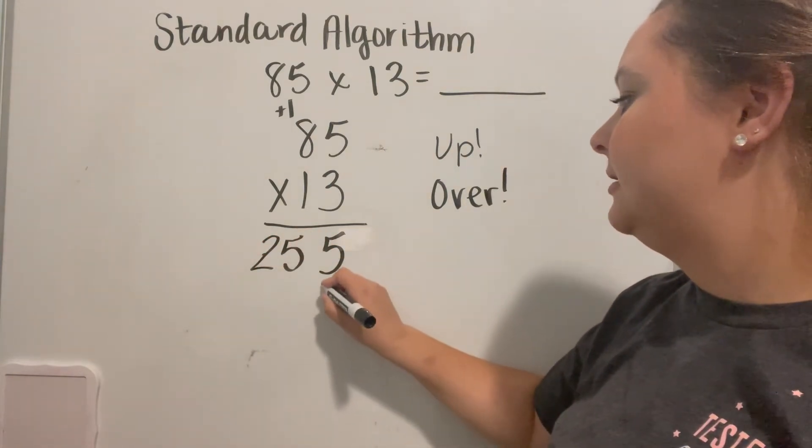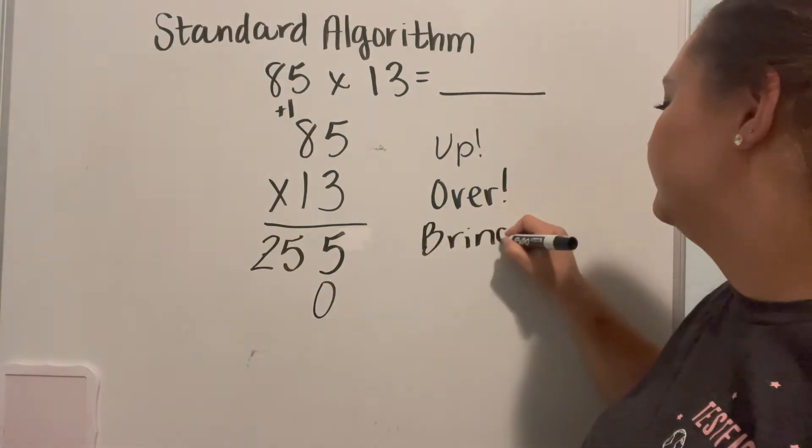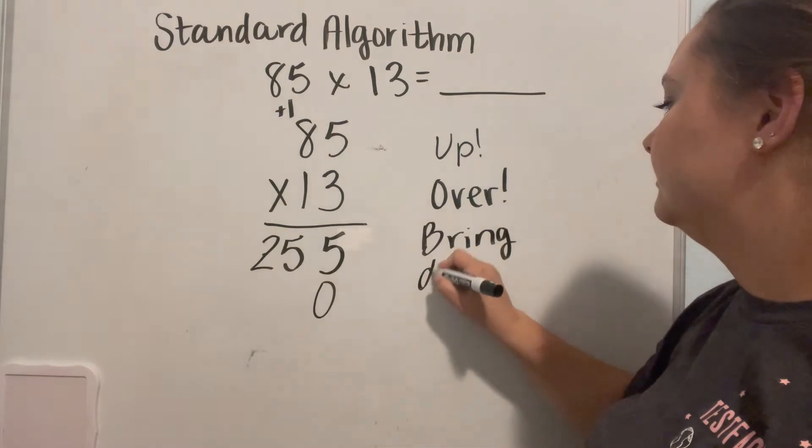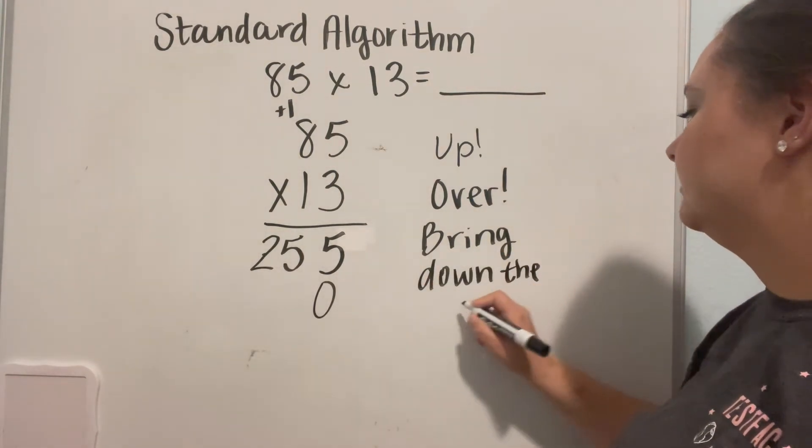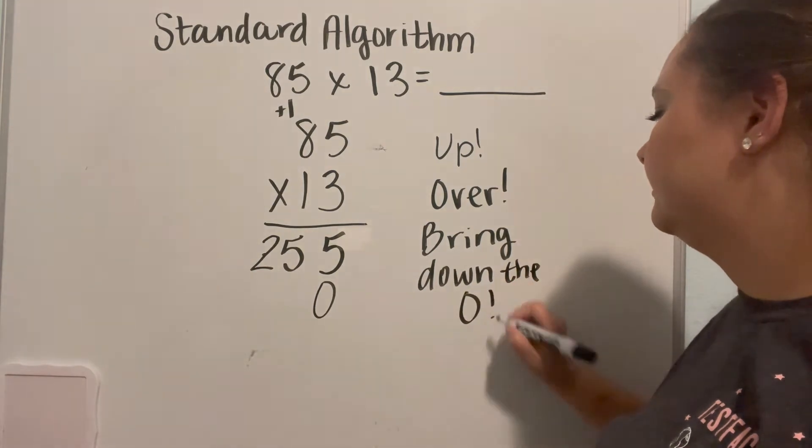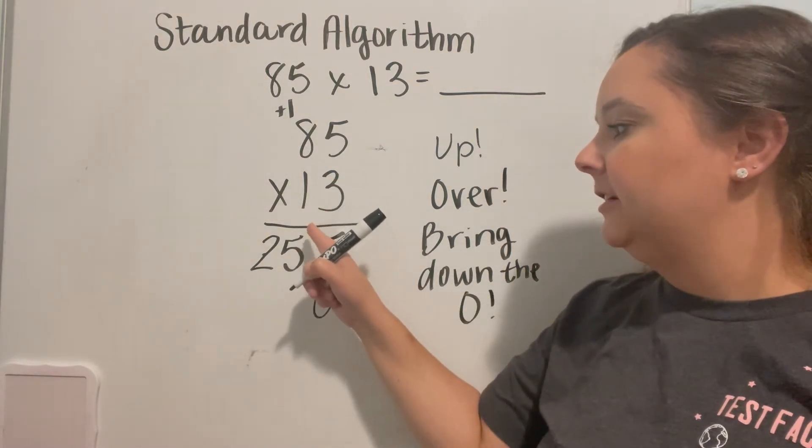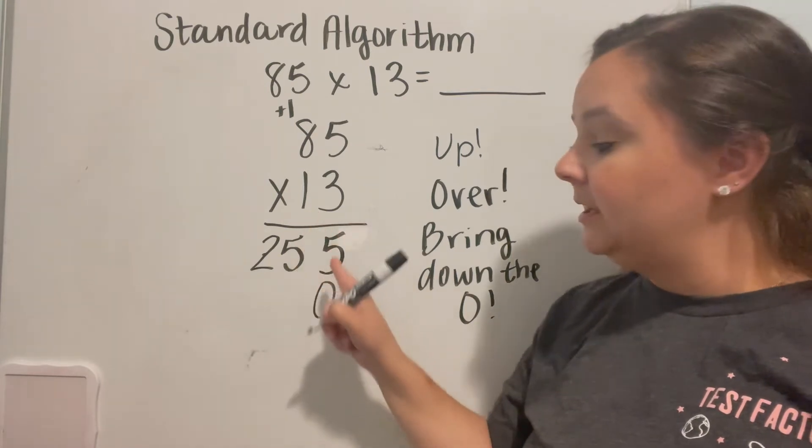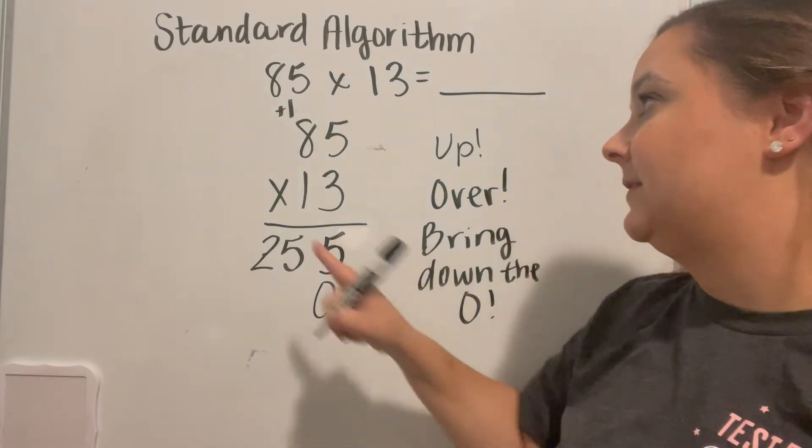Then we bring down a zero. And the reason we bring down our zero is because we're moving to a new place value into our tens place. So we need to add a zero to show that we're moving to the next place value.